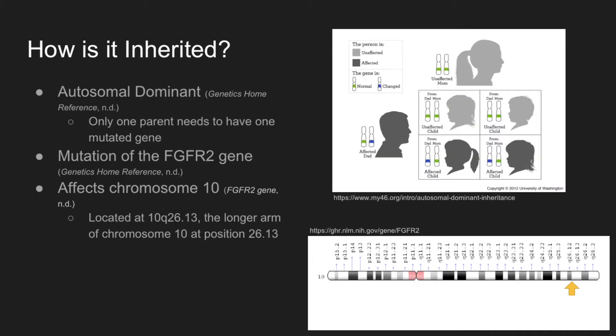How is it inherited? Jackson-Weiss Syndrome is autosomal dominant, which means that only one of the parents needs to have one mutated gene for their child to have a possibility of having the disorder. If there is only one mutated gene, there is a 50% chance that the child born between them will have this disorder. It's caused by a mutation of the FGFR2 gene and affects chromosome number 10.